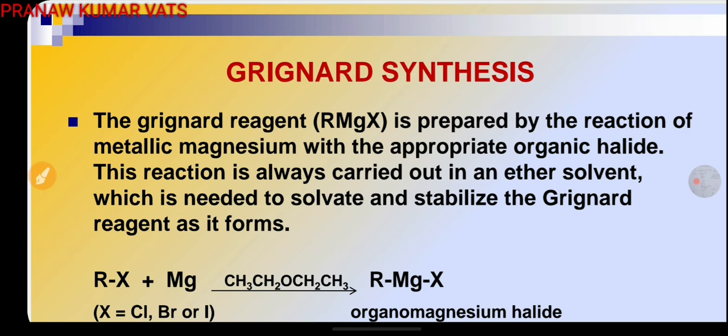The reaction is R-X, where X may be Cl, Br, or I, when treated with magnesium in the presence of ether, results in formation of RMgX organomagnesium halide, which is a Grignard reagent.